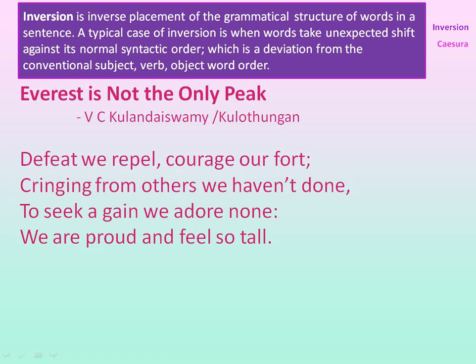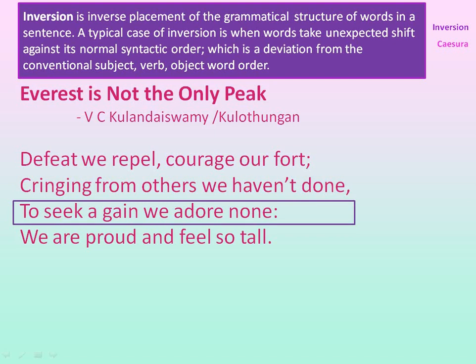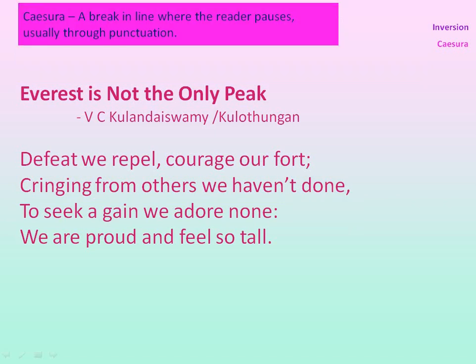In the next line also, 'to seek again, we adore none' — the normal structure should have been 'we adore none to seek again.' Here also there is a change, hence inversion. Cesura is a break in a line where the reader pauses, usually through punctuation. In the line 'defeat we repel,' after that there is a comma used before 'courage, effort,' hence cesura.